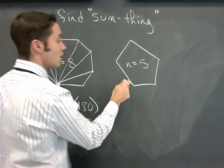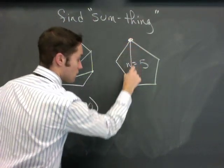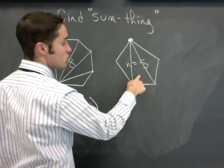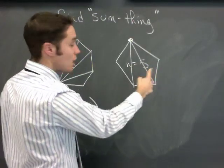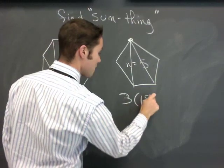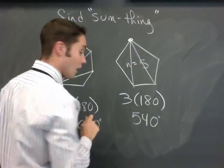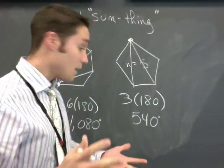What about a pentagon? I'll pick this top corner everyone loves. Connect those two. There's a triangle. Connect those two. There's a triangle. Oh, and that one's a triangle. So I'm done. I have three triangles. Three times 180 is 540. That's the sum of the angles of a pentagon.